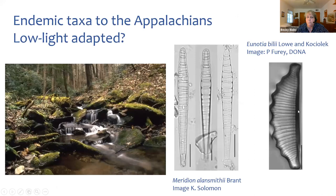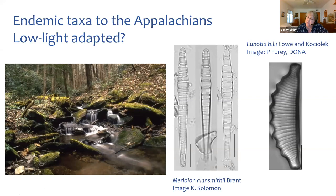There is an enormous number of endemic taxa to the Appalachians, and I expect — though we haven't truly tested it — that many of these taxa are low-light adapted. Paula Furey has done a ton of work in the Appalachians looking at Eunotia, and the diversity of Eunotia there is astonishing. Meridion allansmithii was described by Lynn Brandt, and I expect Meridion circulare in Rex's diagram partly encompasses this really neat Meridion we find in these low light environments.